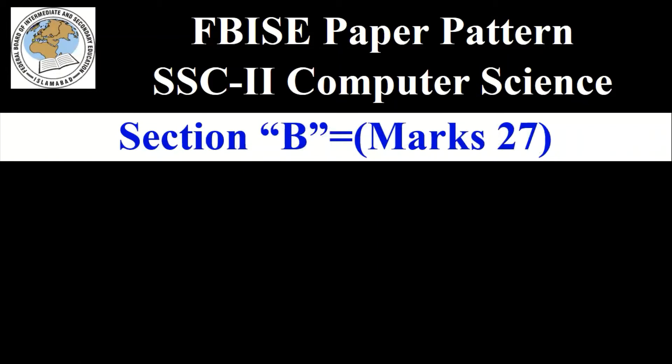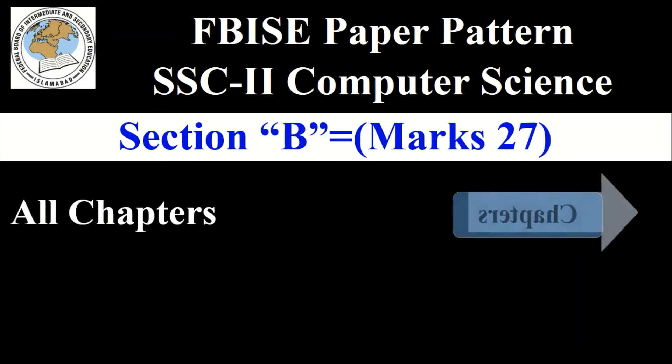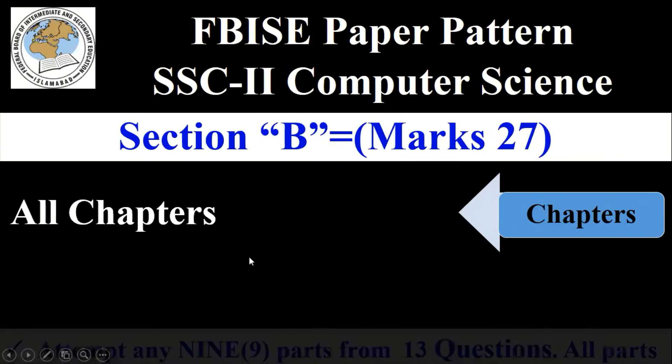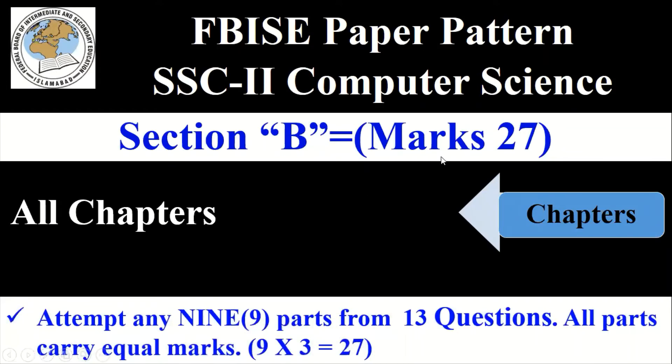Section B. Section B has 27 marks and it covers all chapters. Normally in Section B we have short questions, so short questions could come from any chapters that are included in your syllabus according to the FBISE paper pattern. Short questions are included in Section B and how will you get 27 marks from Section B?